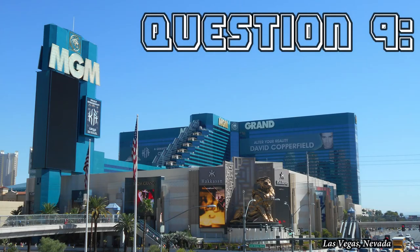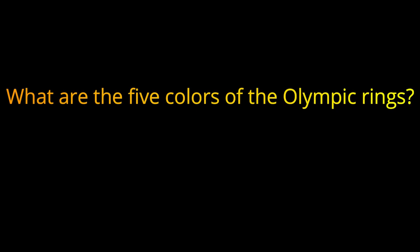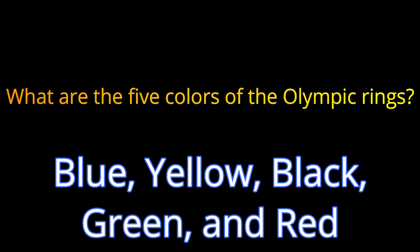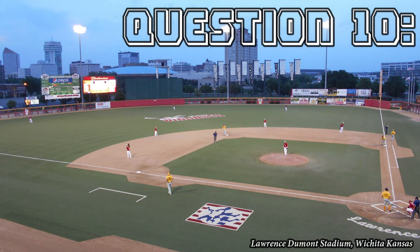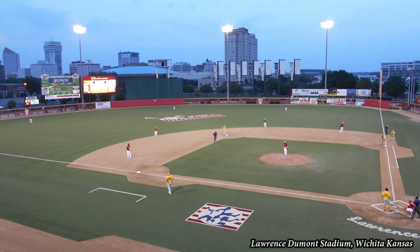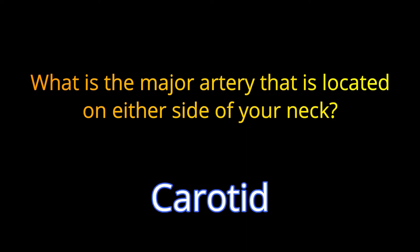Question 9. What are the five colors of the Olympic rings? The answer is Blue, Yellow, Black, Green, and Red. Question 10. What is the major artery that is located on either side of your neck? The answer is The Carotid Artery.